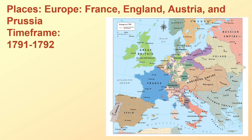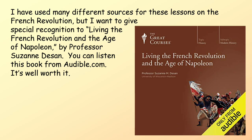This time the places are not just France — it's all of Europe, particularly France, England, Austria, and Prussia. The time frame is 1791–1792. I've used many different sources for these lessons on the French Revolution, but I want to give special recognition to The Great Courses: Living the French Revolution and the Age of Napoleon by Professor Suzanne Desan. You can listen to this book from audible.com — it's well worth it.